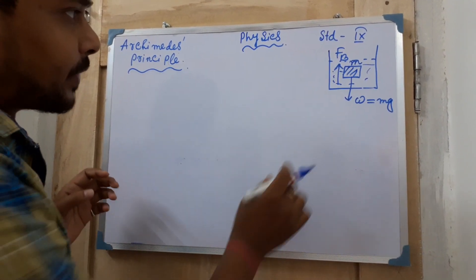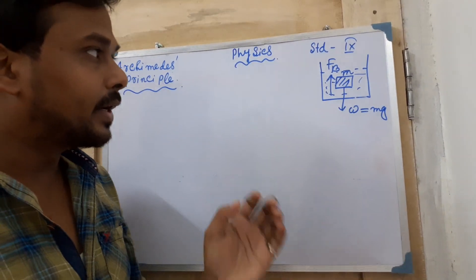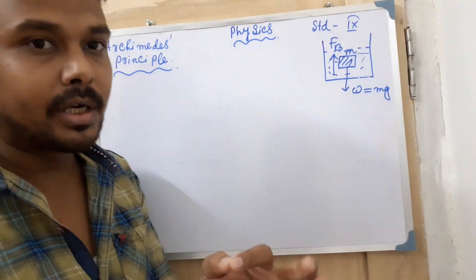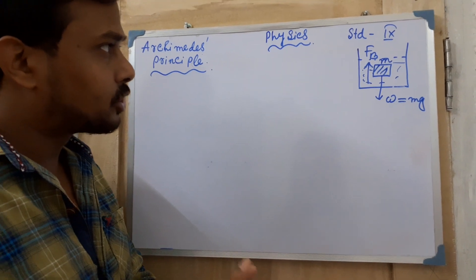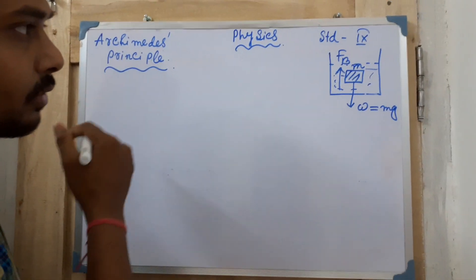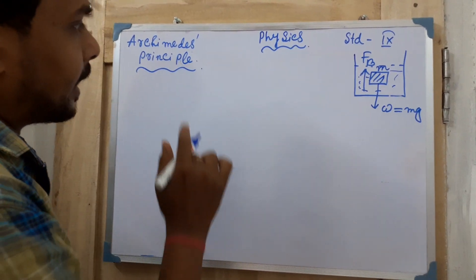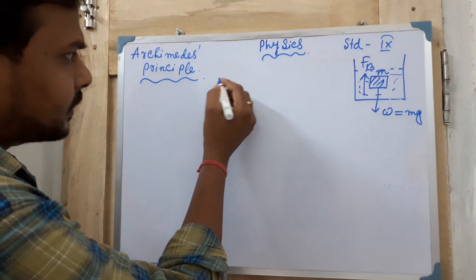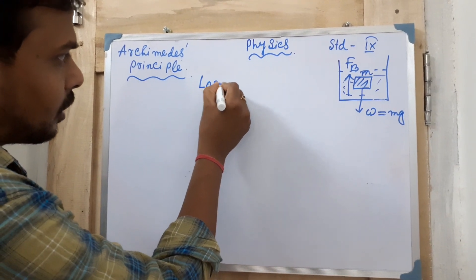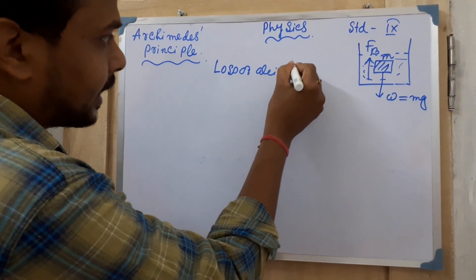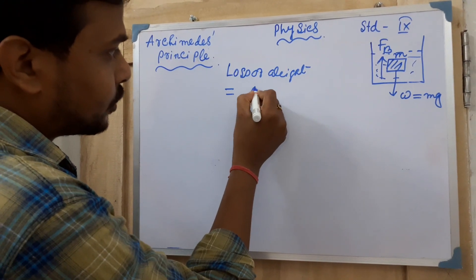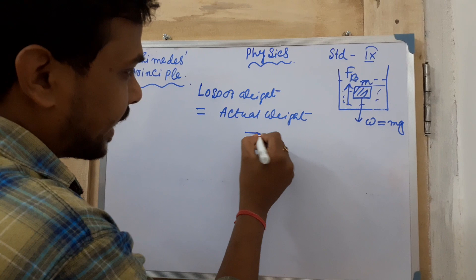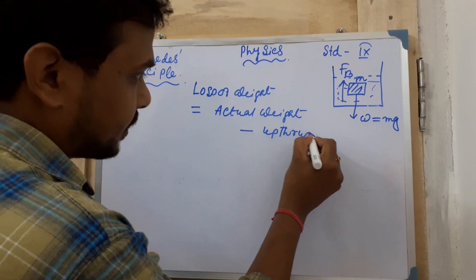Whenever a body is placed inside a liquid, its weight will reduce. That reduced weight is called the apparent weight of the body, and you can easily see there is some loss of weight. To calculate that loss of weight, the formula is: loss of weight = actual weight of the body minus upthrust.